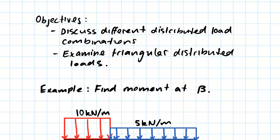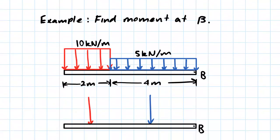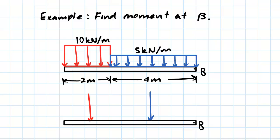We'll start by looking at this example, which is a beam loaded with two different UDLs. The UDL in red has a magnitude of 10 kN per meter and acts over a 2 meter span, and the UDL in blue is 5 kN per meter and acts over a 4 meter span.